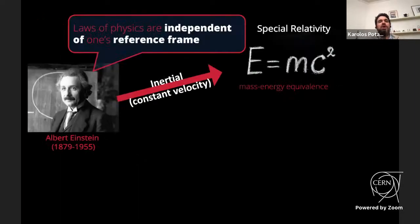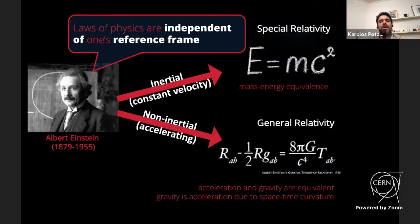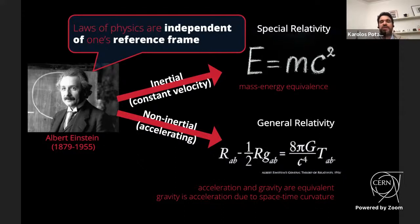Einstein postulated that the laws of physics are independent of one's reference frame. Starting with inertial frames — those moving at constant velocity — this led to special relativity and the famous equivalence E=mc². He then studied accelerating reference frames, leading to general relativity, which is much more complex. Its main insight is that acceleration and gravity are equivalent, and gravity is acceleration due to spacetime curvature.